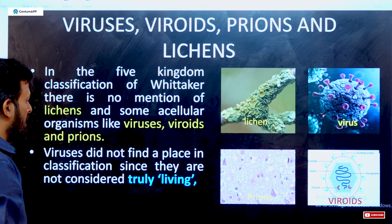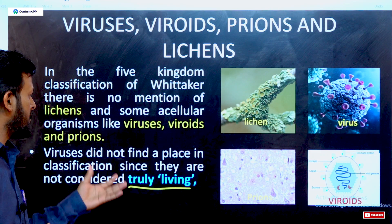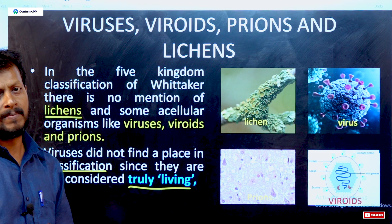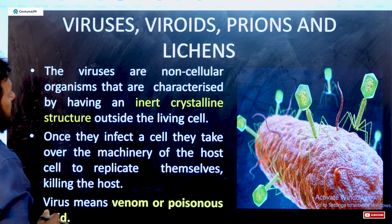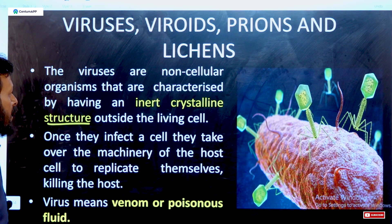Viruses are non-living things and have no place in the classification. Similarly, Lichens are also not classified because lichens are associations of algae and fungi. Viruses are non-cellular organisms with a crystalline structure. Outside of living cells, viruses are called venum or poisonous — meaning toxic substances occur.